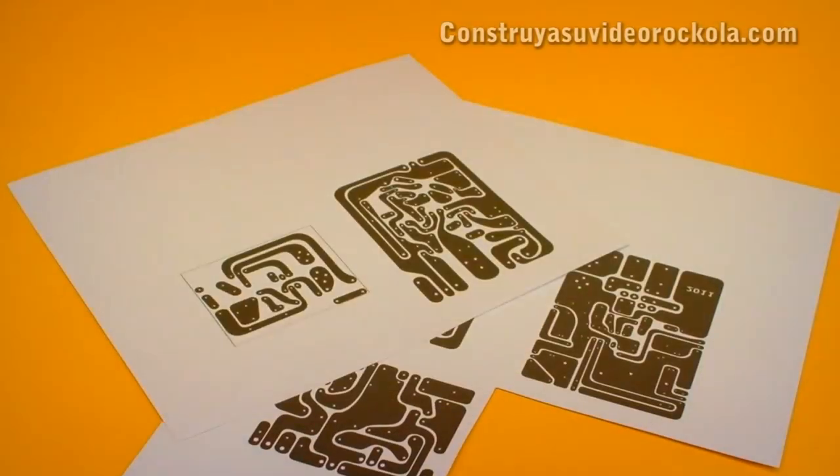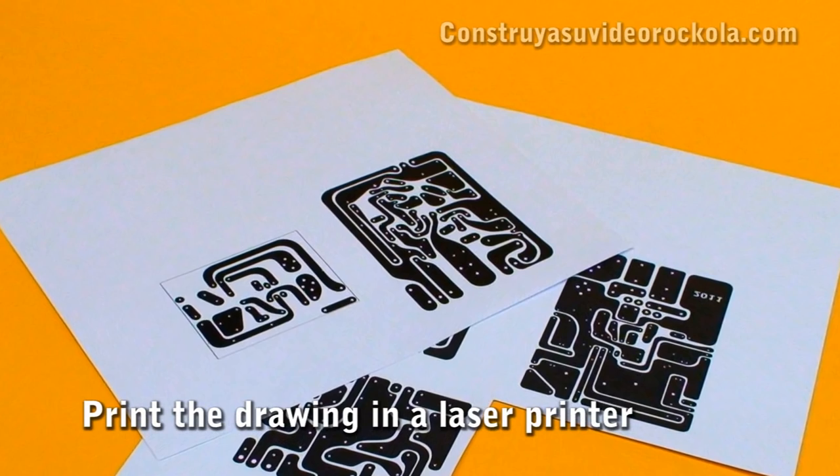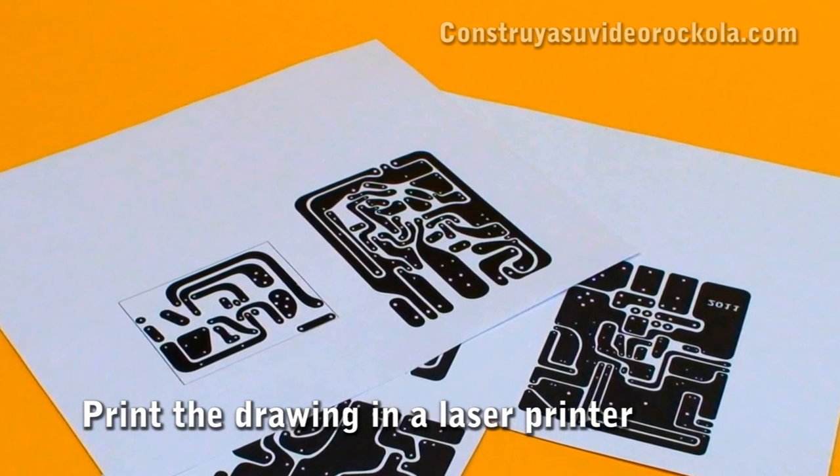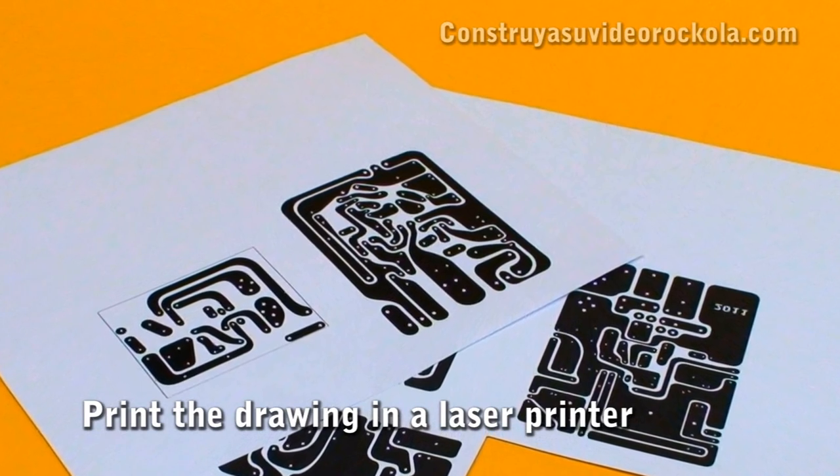Procedure. The first step is to print the printed circuit pattern on the propacold paper or the thermotransferable paper, using a laser printer.